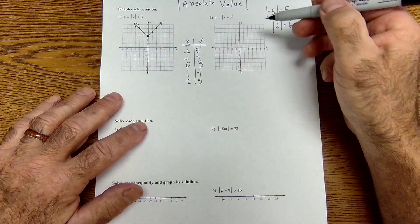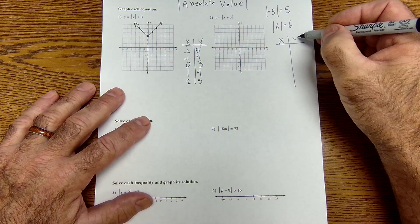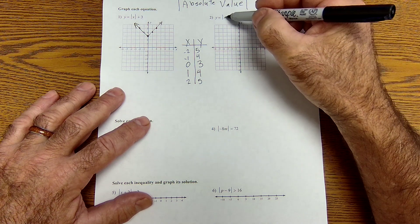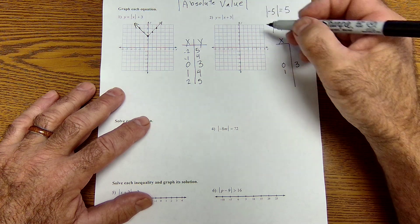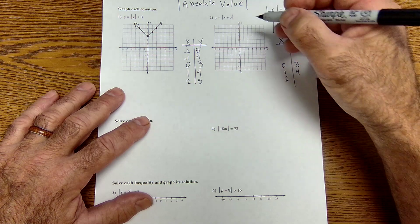Pause the video and try number 2. Same way, I'm going to set up x and y, pick values of x. I'm going to try something like a 0. 0 plus 3 is 3. Pick a 1, 1 plus 3 is 4. Absolute value has no effect on it. 2 is 5.